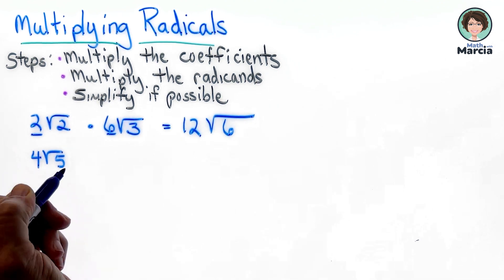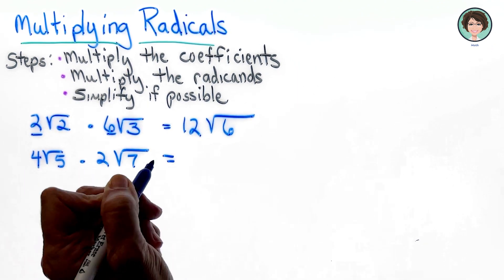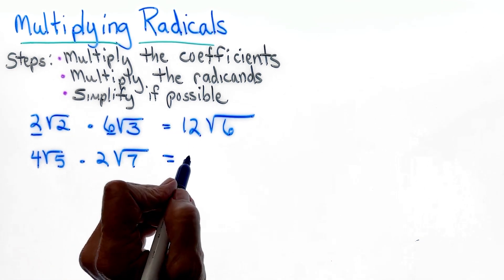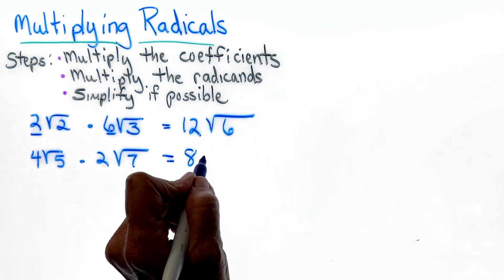4 square roots of 5 times 2 square roots of 7. Again, the coefficients, 4 times 2 is 8. 5 times 7 is 35.